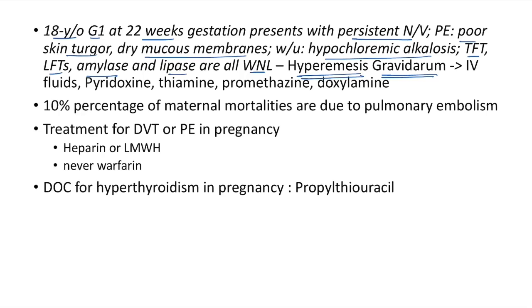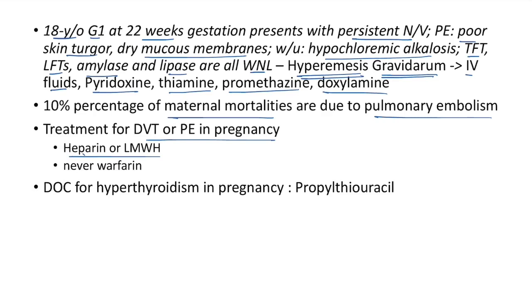Treatment of hyperemesis gravidarum: IV fluids, pyridoxine, thiamine, and antiemetics like promethazine or doxylamine. It is important to remember that 10% of maternal mortalities are due to pulmonary embolism. Treatment for DVT or pulmonary embolism in pregnancy: heparin or low molecular weight heparin. Warfarin should be avoided in pregnancy. The drug of choice for hyperthyroidism in pregnancy is propylthiouracil.